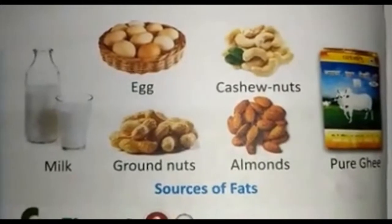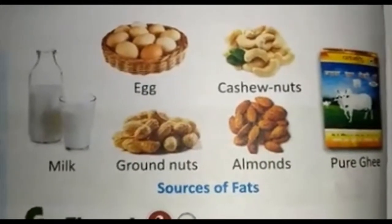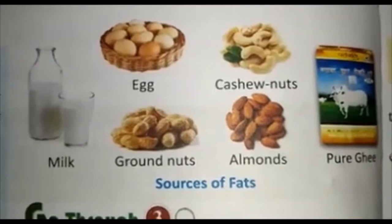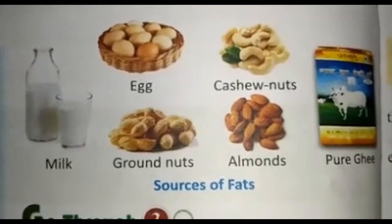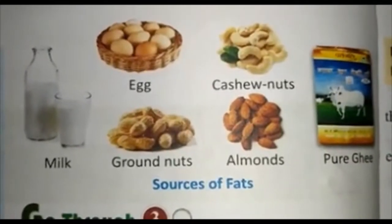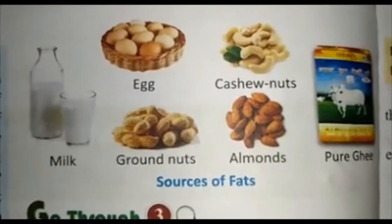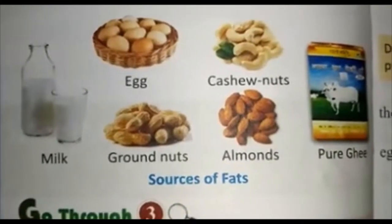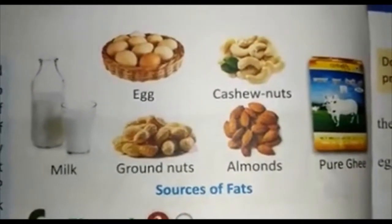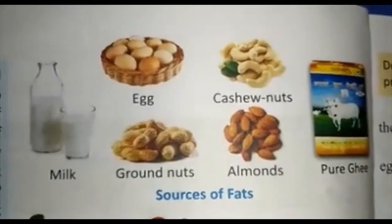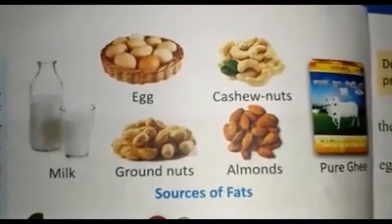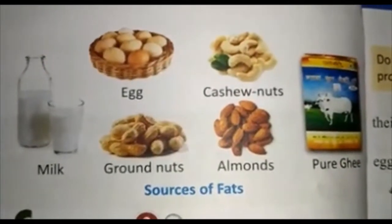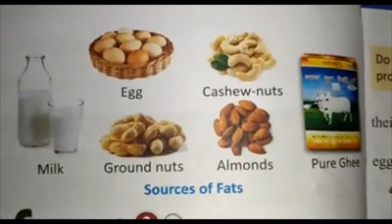Second, fat. Fat also provides energy. Fat is deposited in the muscle and under the outer skin of animals. This reserve fat acts as an energy bank for animals. We obtain fat from milk, egg, cashew nuts, groundnuts, almonds, and pure ghee.